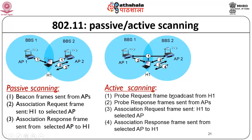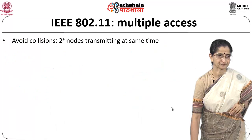In active scanning mode, the host actively looks for access points. Step one: the host broadcasts a probe request frame. Step two: all APs that receive this probe request respond with probe response frames. Step three: the host selects one access point based on signal strength or other criteria and sends an association request frame. The selected AP sends back an association response frame, completing the association. These are the two modes — passive and active — for getting connected to the network.